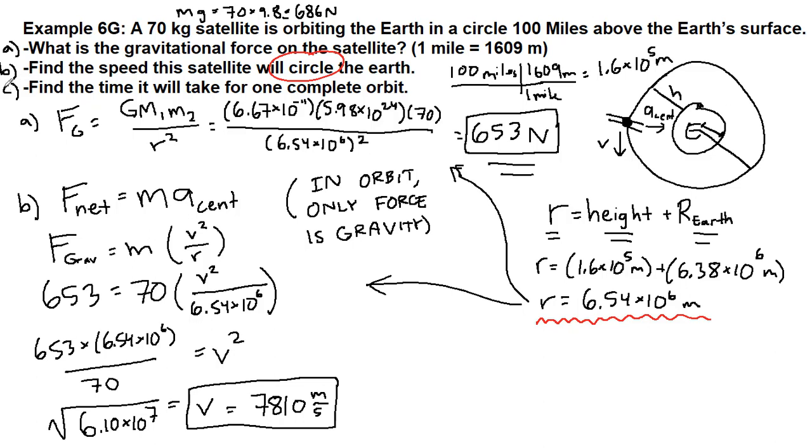The last part is finding the time it takes to complete one orbit. So we are looking for the time period. This is, again, just like the previous problem, when we return to this understanding that there is a tool we've built. The speed in a circle is equal to 2 pi r, the circumference of the circle, divided by that time period.